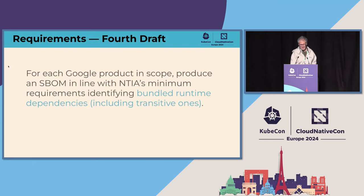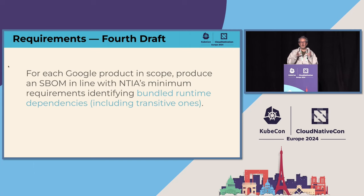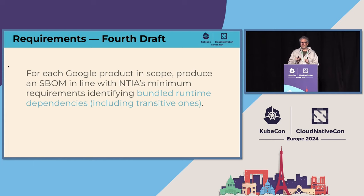As a pragmatic product person, I decided to scope in. Let's focus on the most critical part of the SBOM, which we identified as the bundled runtime dependencies, including transitive ones. We're shipping a piece of software, inventory all the bits and bytes of the software, and you're done.